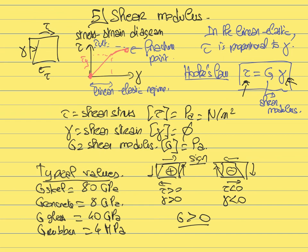In the next section we will discuss another material property. So far we have seen the Young's modulus, which characterizes stiffness under normal stress, and the shear modulus, which characterizes stiffness under shear deformation. Next we will talk about Poisson's ratio, another mechanical property of materials that characterizes the elastic response of a given material.